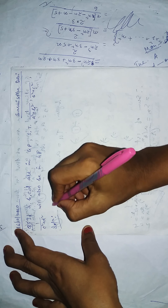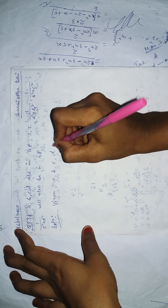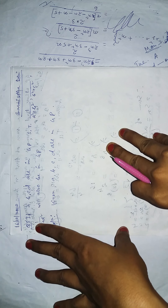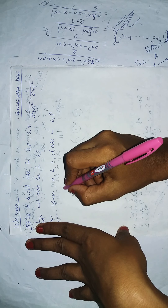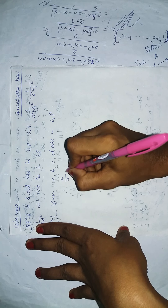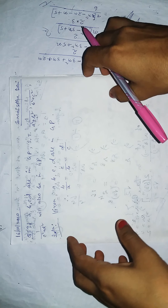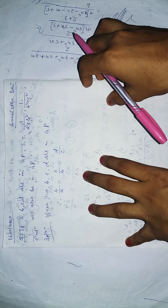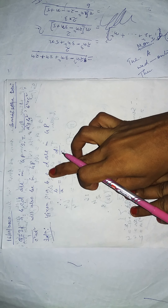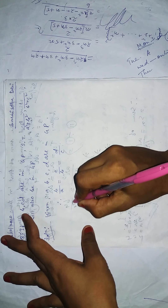Let's start the solution. Given: a, b, c, d are in GP. According to the geometrical progression, we get b/a = c/b = d/c. Since a, b, c, d are terms in GP, the condition is: second divided by first equals third divided by second equals fourth divided by third.